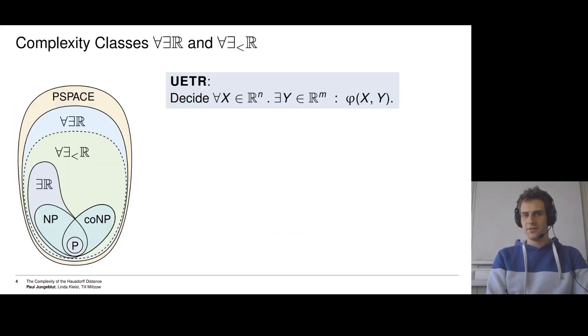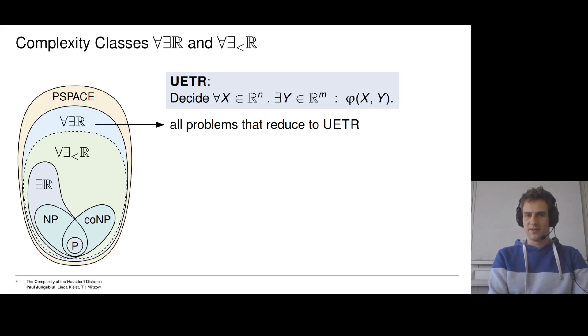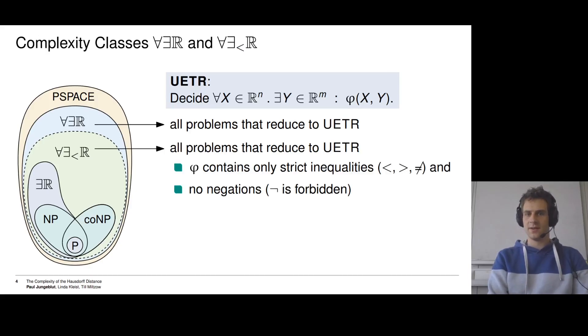This is enough to define the complexity classes. So UETR, remember, is to decide whether such a formula is true. And the complexity class ∀∃ℝ is now all problems that reduce to UETR. And by reduce, I mean the standard polynomial time many-one reductions.